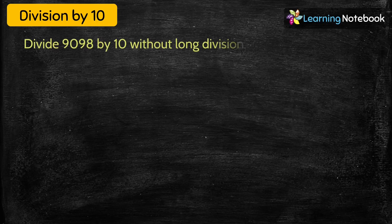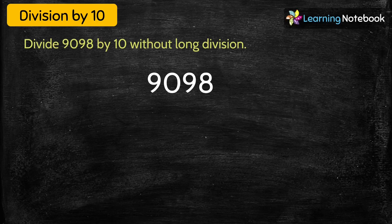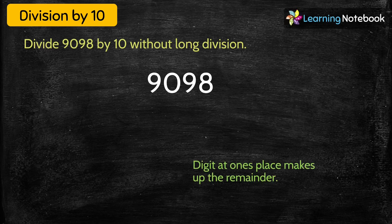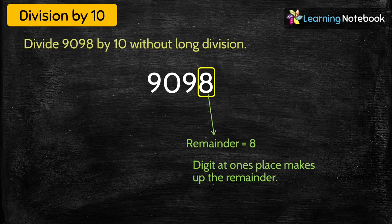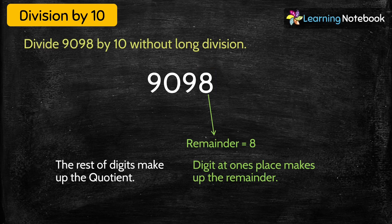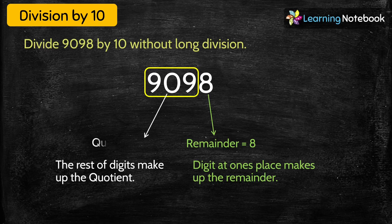One more: divide 9098 by 10 without long division. The digit at ones place is 8, so remainder = 8. The rest of the digits — 909 — make up the quotient. Quotient = 909, remainder = 8.